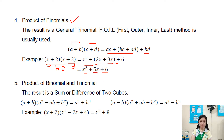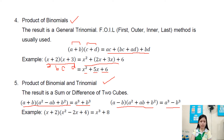Another special product is the product of a binomial and trinomial, resulting in a sum or difference of two cubes. The formula is a plus b times a squared minus ab plus b squared equals a cubed plus b cubed. Its difference form: a minus b times a squared plus ab plus b squared equals a cubed minus b cubed. For example, x plus 2 times x squared minus 2x plus 4 results in x cubed plus 8.